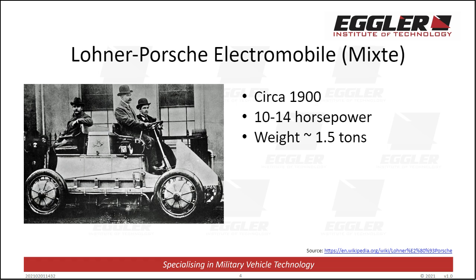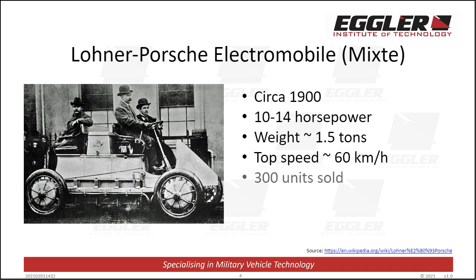Despite its weight, the vehicle was very powerful and fast for the time. Later models, using a newer engine and transmission, reached speeds of 57 kilometers per hour. The vehicle even won the prestigious 1901 Exelberg Rally, breaking Austrian speed records of the time. All up, more than 300 Electromobiles were sold. For about the next century, none of the hybrid electric vehicles that followed the Electromobile were commercially successful. Despite this technology outperforming most of their combustion engine peers in terms of speed and acceleration, they simply couldn't compete due to persistent problems associated with high weight, complexity and cost.